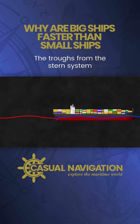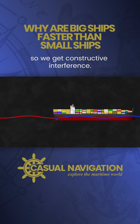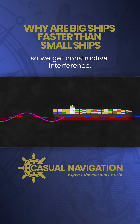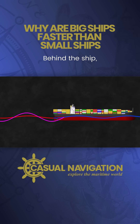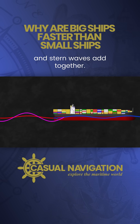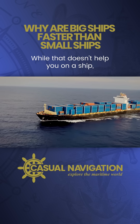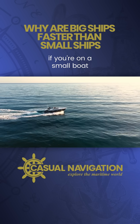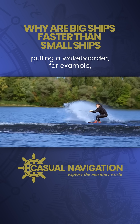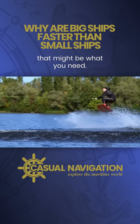The troughs from the stern system and the bow system are in the same place, so we get constructive interference. Behind the ship, a massive wash is generated as the bow waves and stern waves add together. While that doesn't help you on a ship, if you're on a small boat pulling a wakeboarder for example, that might be what you need.